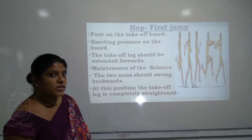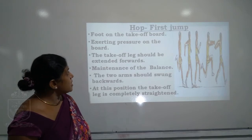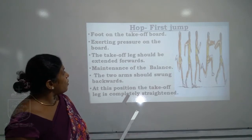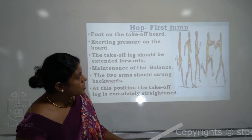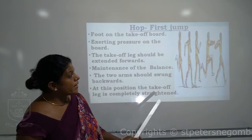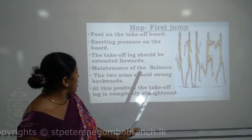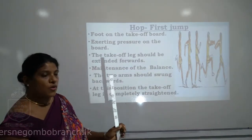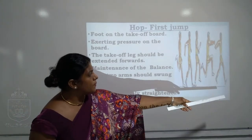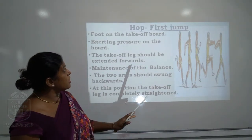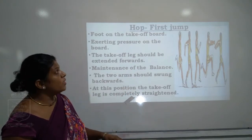Hop — it is the first jump. Keep the foot on the take-off board, exerting more pressure on it. The take-off leg should be extended forward. Maintenance of body balance is important; the two arms should swing backwards. At this position, the take-off leg is completely straightened. These are the steps to be followed under hop or the first jump.